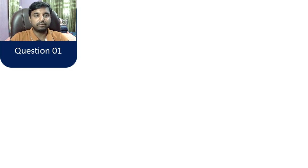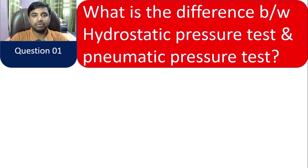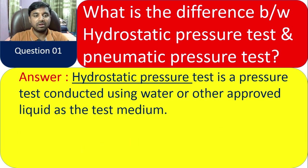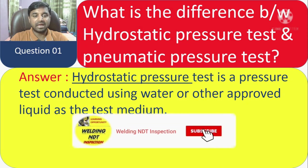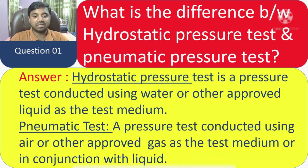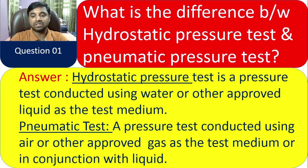Question 1: What is the difference between hydrostatic pressure test and pneumatic pressure test? This is a very important question. The answer is: hydrostatic pressure test is the pressure test conducted using water or other approved liquid as the test medium. The main difference is the test medium — hydrostatic uses water or any other approved liquid, whereas pneumatic uses a different medium.